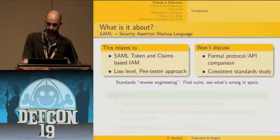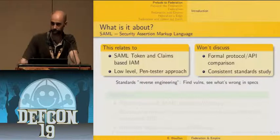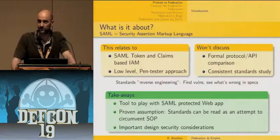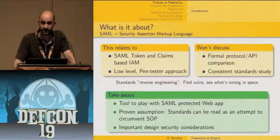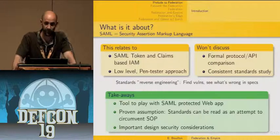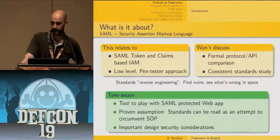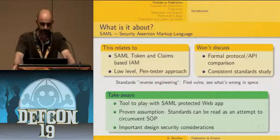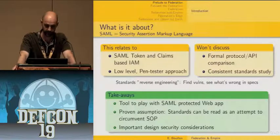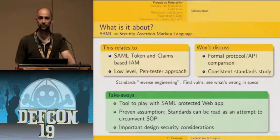The approach I've been using is a kind of standard reverse engineering — find vulnerabilities and then go back into the specification to see why something went wrong. The takeaways of this presentation are: first, adapted tools to have classical web application scanners better cope with SAML-protected web applications; second, a demonstration that the involved standards can be read as an attempt to circumvent the same origin policy; and finally, important security considerations before joining or creating such a federation.